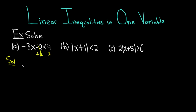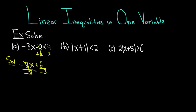Cancel, and so we get minus 3x is less than, and then 4 plus 2 is 6. Now we simply have to get rid of this minus 3. Because we're multiplying by a minus 3, we have to undo it by dividing, so we divide both sides by negative 3. These cancel, and when you divide by a negative number, you have to reverse the inequality. This ends up being x greater than negative 2.